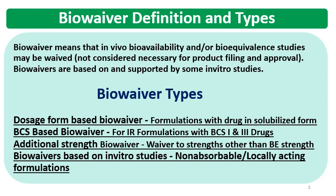Second is BCS-based biowaiver. If the drug formulation contains a drug substance belonging to BCS class 1 or 3, then those formulations can get BCS-based biowaiver if the other requirements are fulfilled. Then there is additional strength biowaiver. This type of waiver applies to strengths other than the BE strength — for example, a 3-strength product like 100 mg, 50 mg, and 25 mg, where the applicant provides bioequivalence data on the 100 mg strength and the remaining strengths can be given a biowaiver.